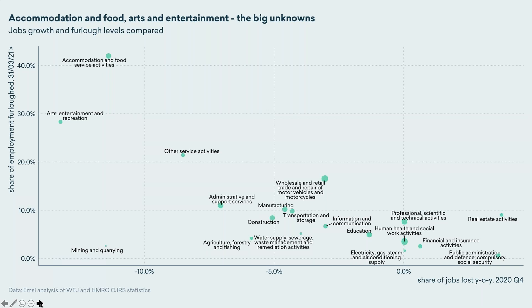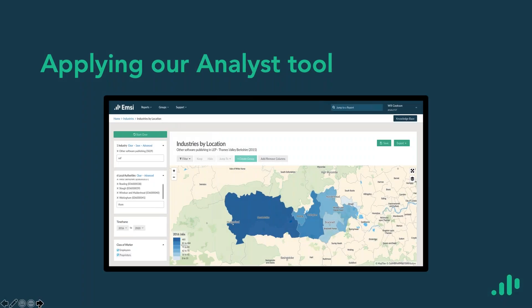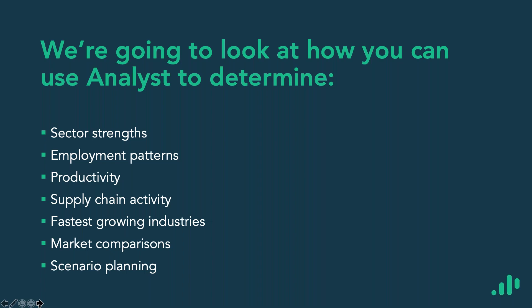That's a quick recap. What we've looked at here is analysis of the workforce jobs series and HMRC statistics. Without further ado, we're going to move on to look at our analyst tool. The focus is slightly different to last week — we're going to look specifically at how the tool can be used to understand sectoral strengths, employment patterns, productivity, supply chain activity, fastest-growing industries, market comparisons, and scenario planning using our input-output model.